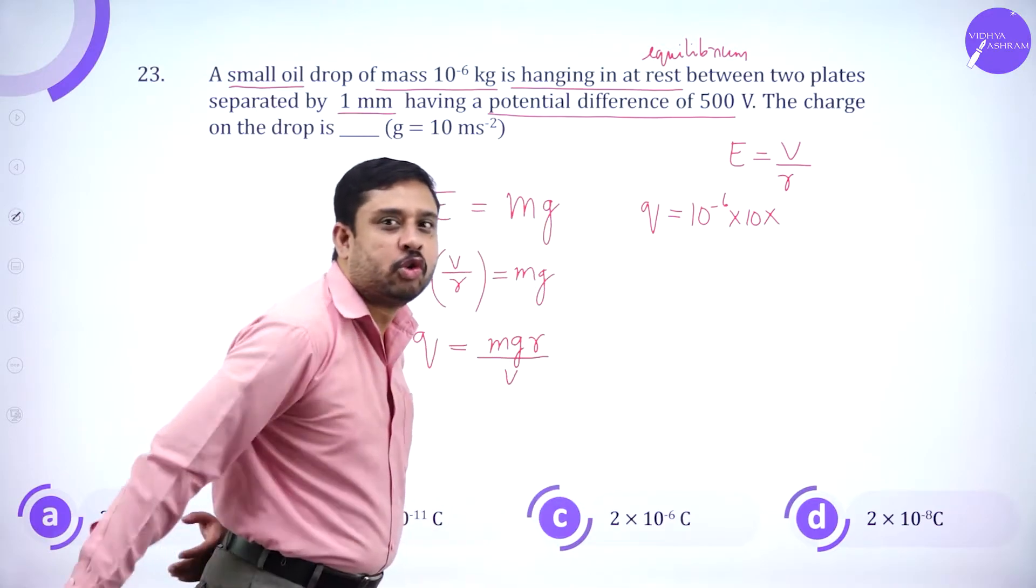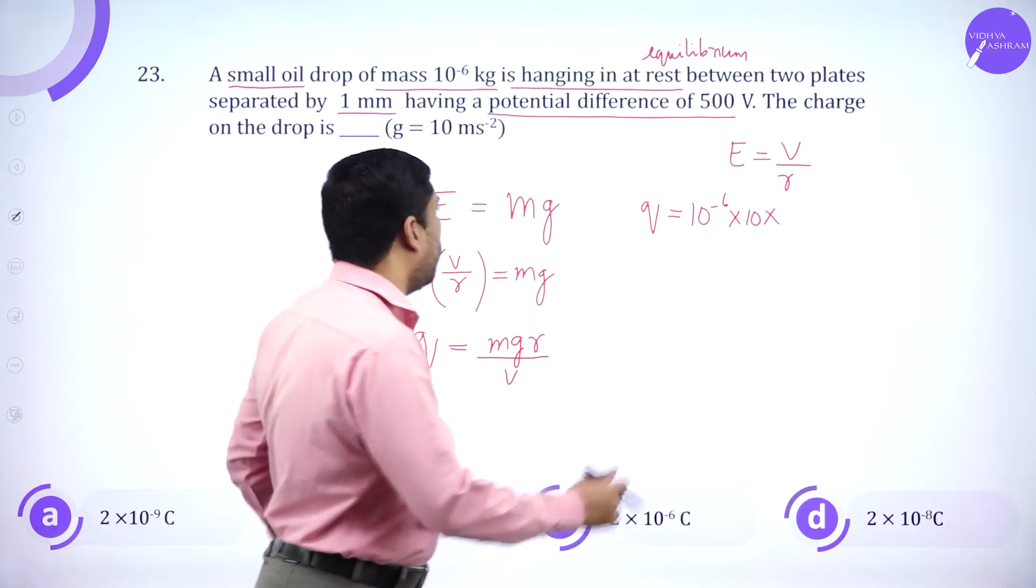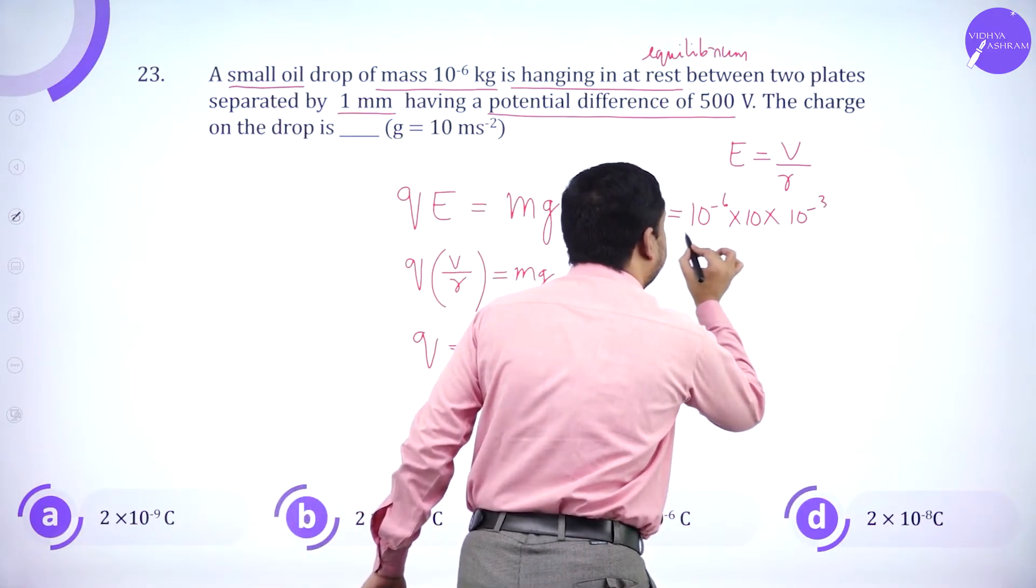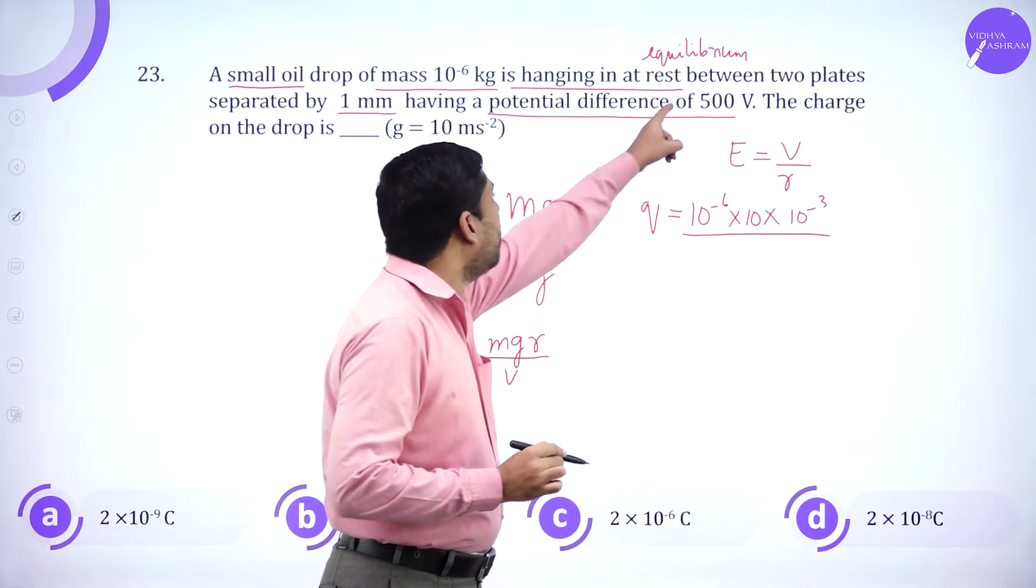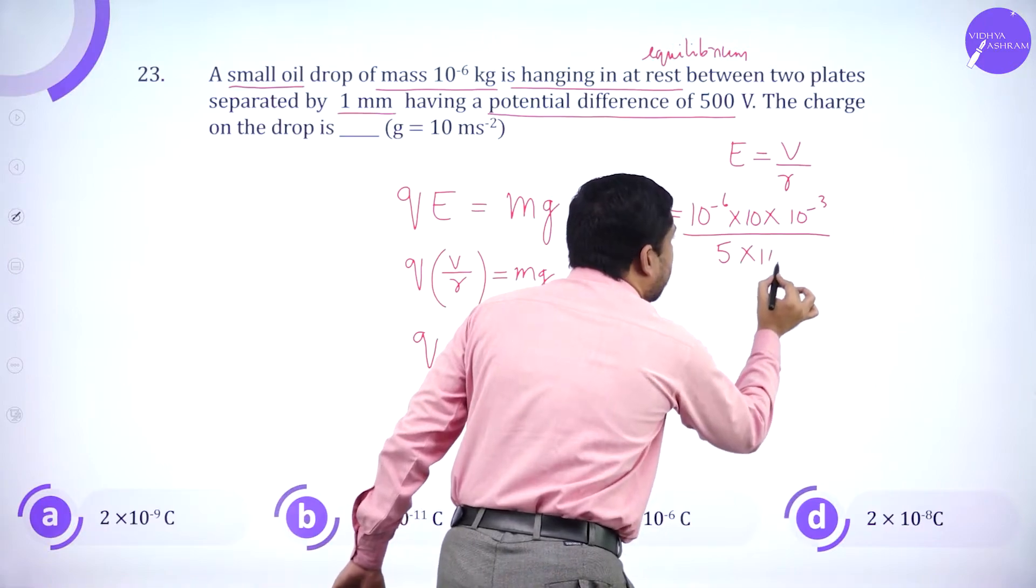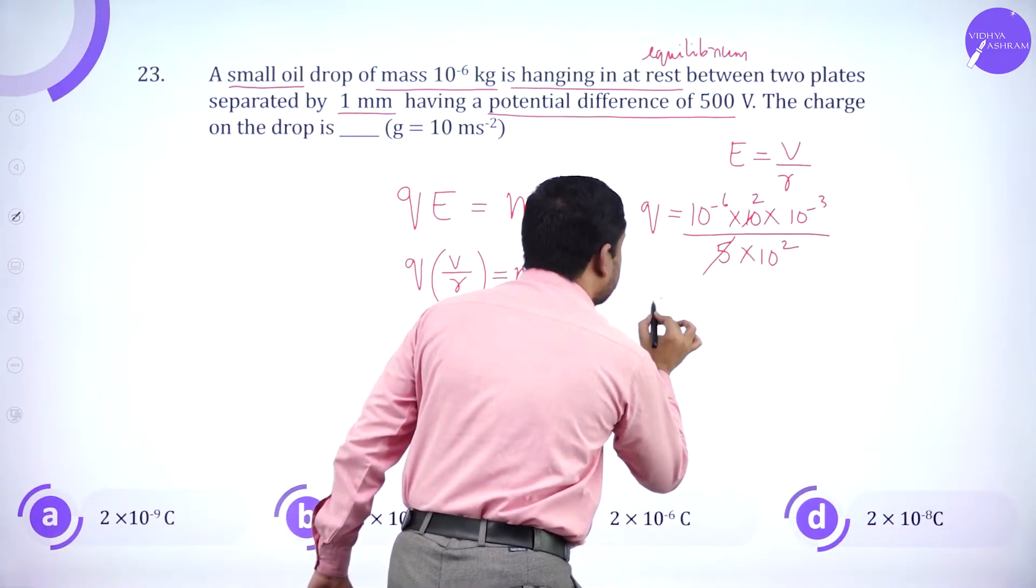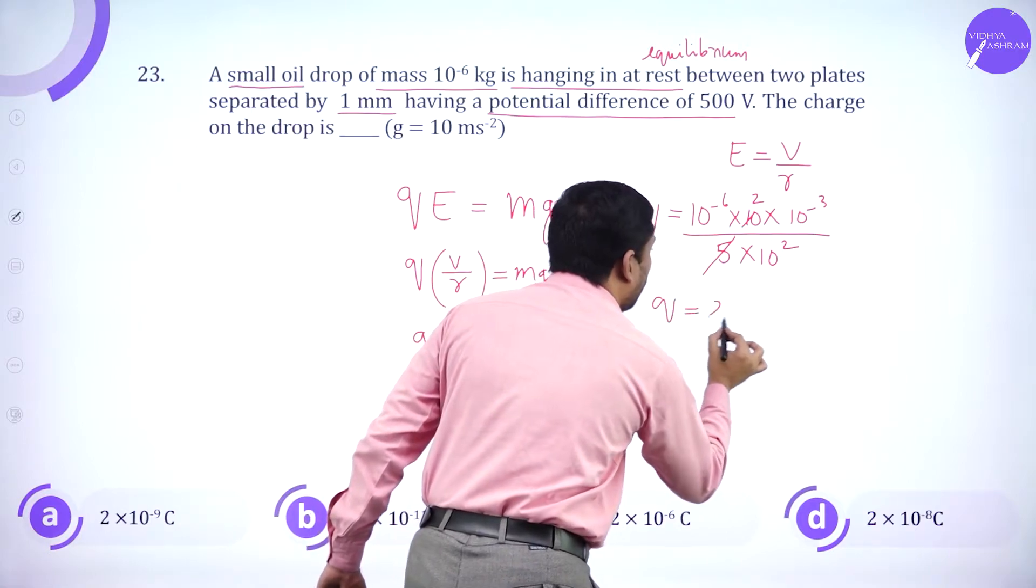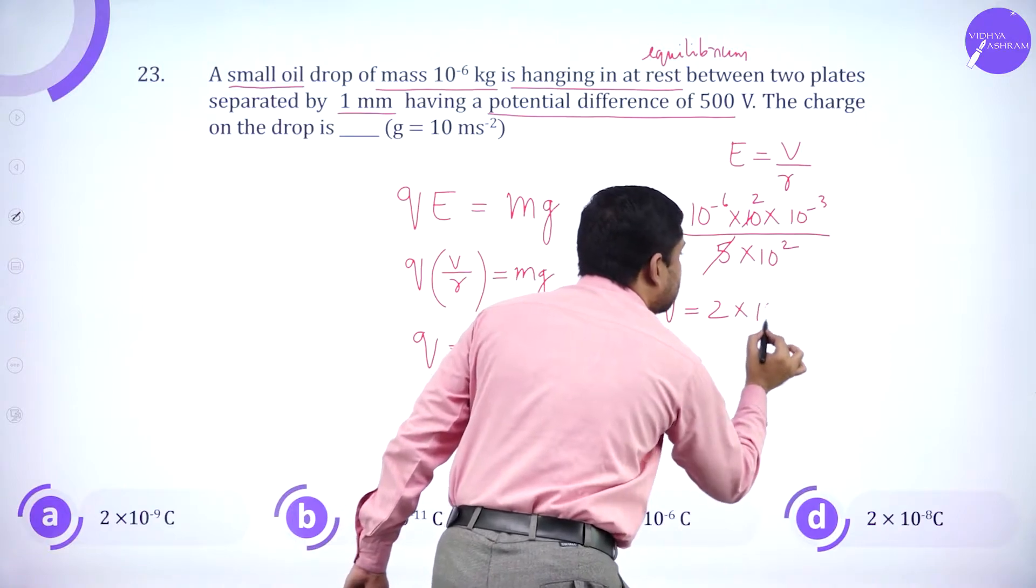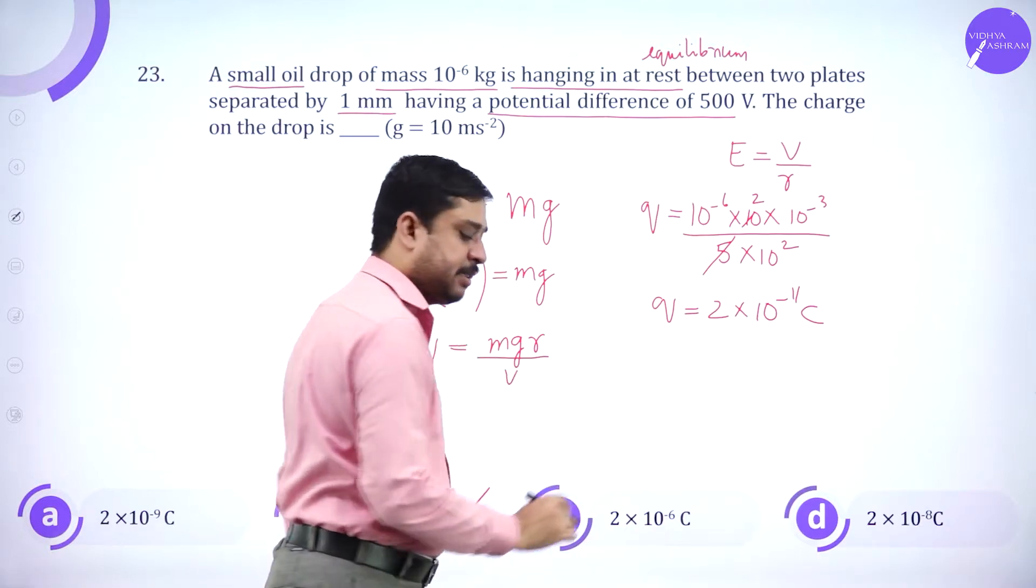So Q, V by R equals MG. So Q equals MG R divided by V. Q equals 10 power minus 6, G I take as 10, R distance 1 mm is 10 power minus 3, divided by V potential 500, 5 into 10 power 2. So Q is 2 into 10 power minus 11.